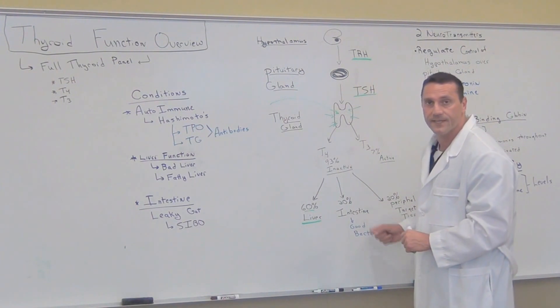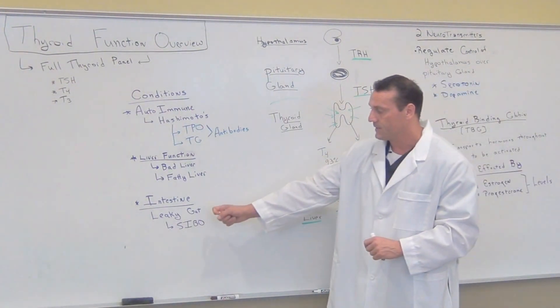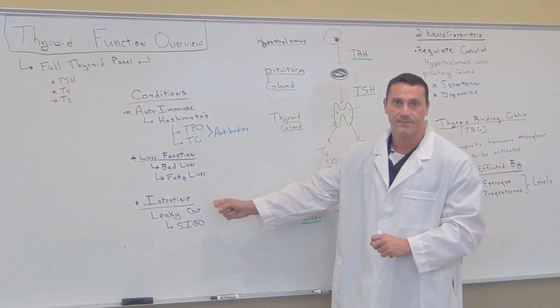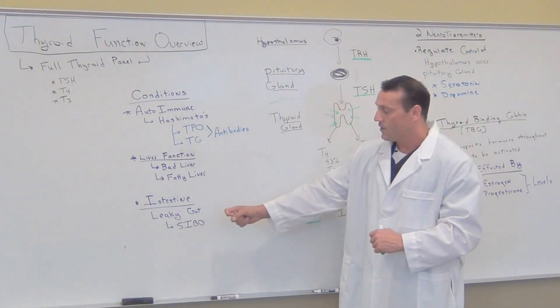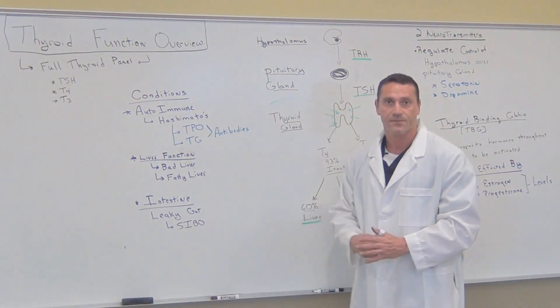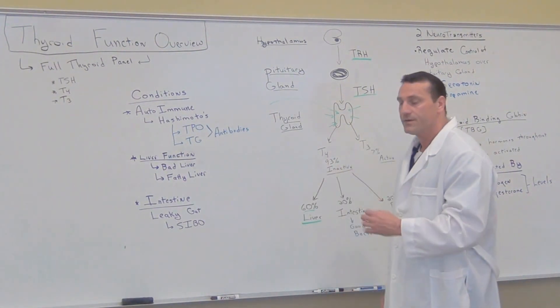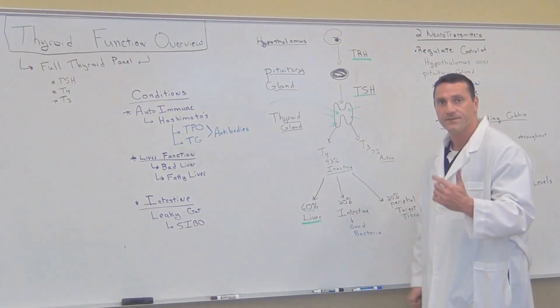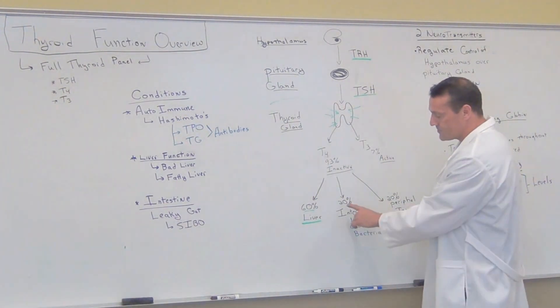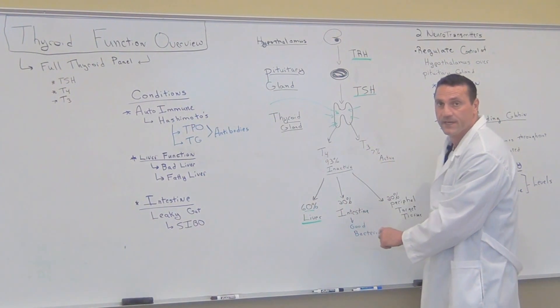20% is converted in the intestines. So if you have leaky gut due to excessive amount of gluten ingestion or conditions like small intestinal bacterial overgrowth, you're going to, again, it's going to inhibit or slow down the conversion of inactive T4 to T3.